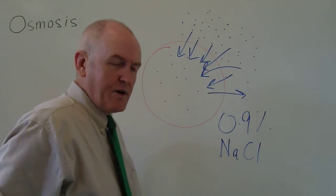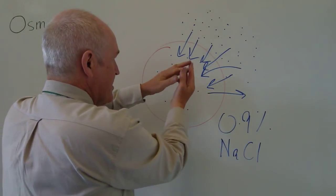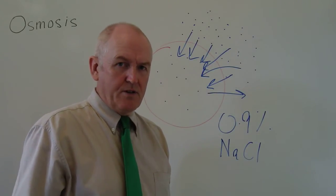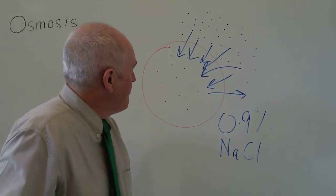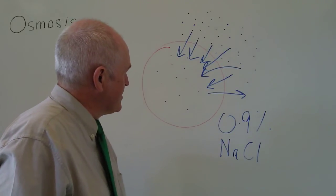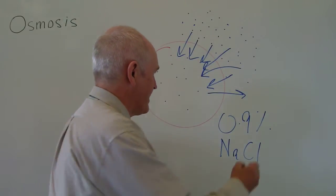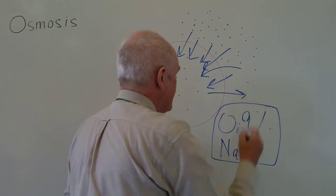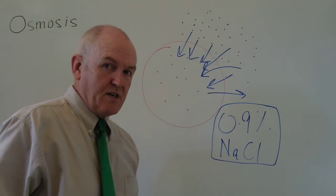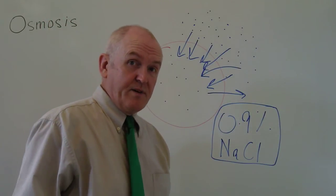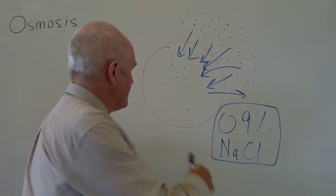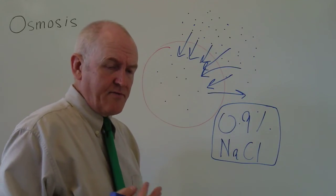The red cell would get fuller and fuller until eventually it would burst. There would be haemolysis, and of course that is a dangerous, potentially life-threatening situation. So we never want to give greatly hypotonic solutions; we want to give isotonic 0.9% saline. If we give large volumes of intravenous water, we are going to get haemolysis.